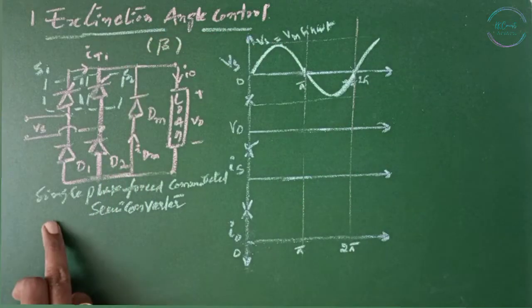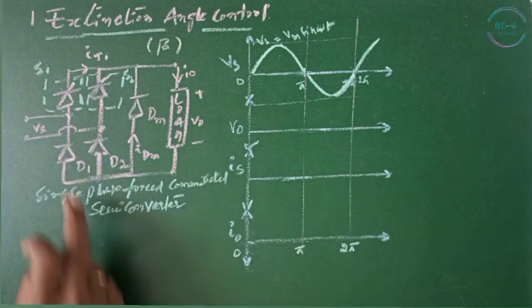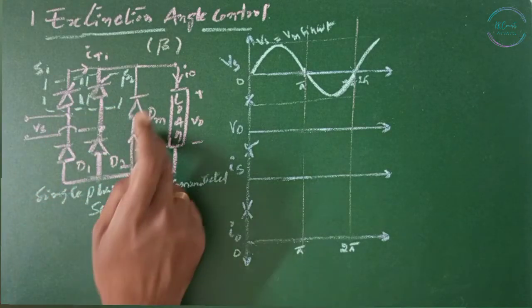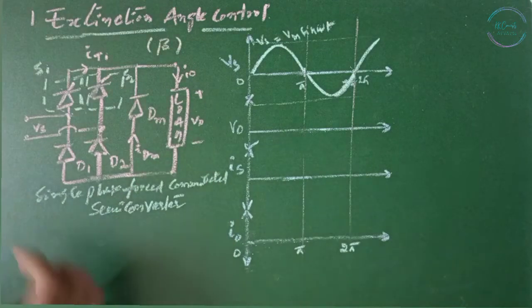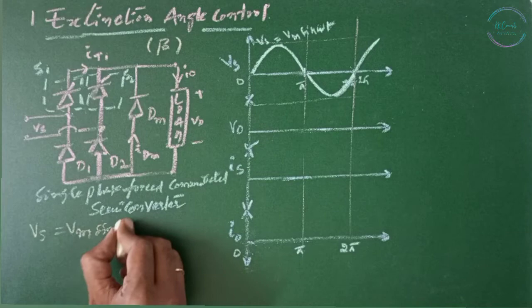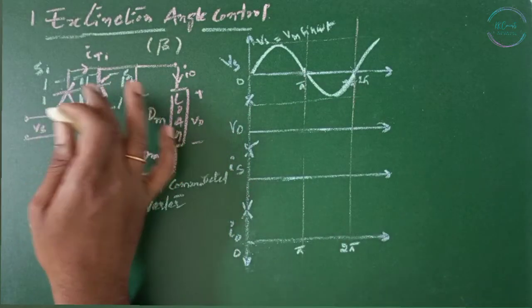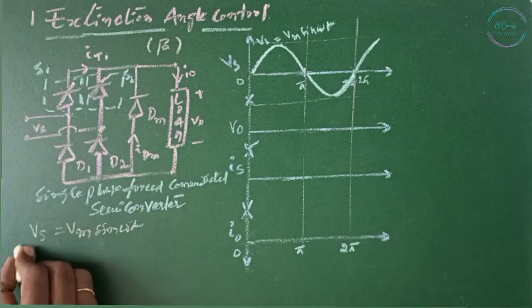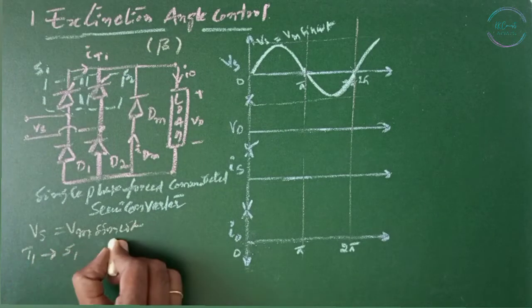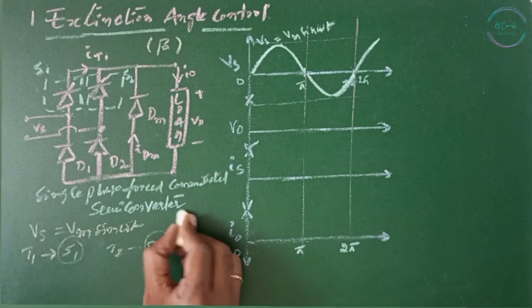We have a single phase force commutated semi-converter. We can see two thyristors T1 and T2, and D1 and D2 are the diodes with the freewheeling diode and the load. A supply of Vs equals Vm sin omega t is given to the converter. Thyristors are replaced with the switches S1 and S2, where S1 and S2 are nothing but GTOs.